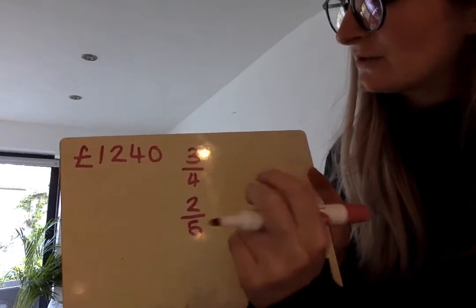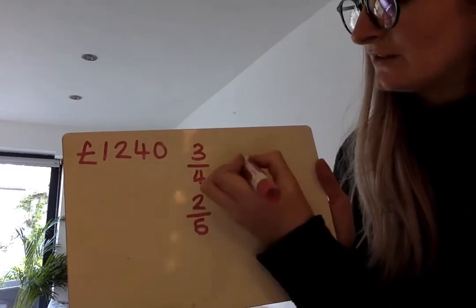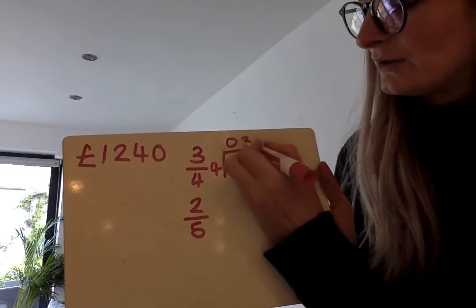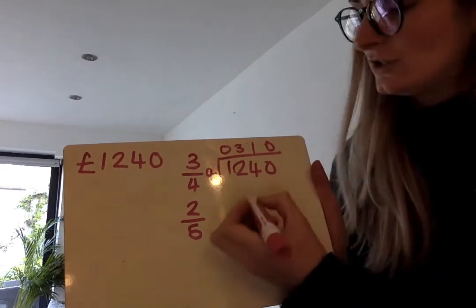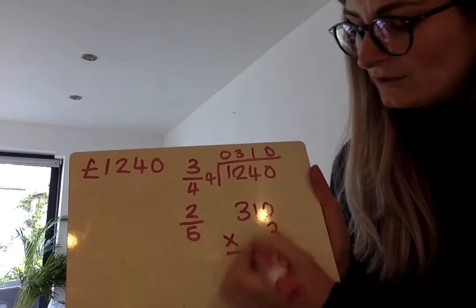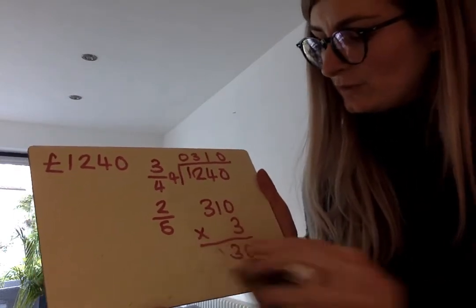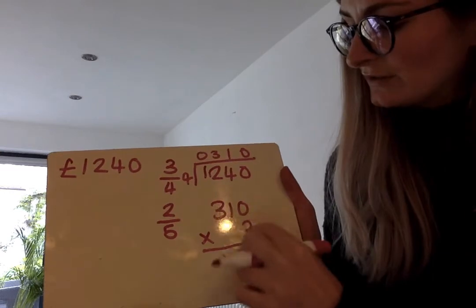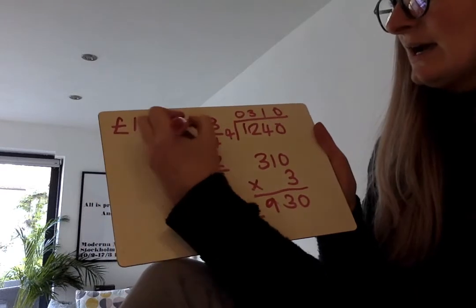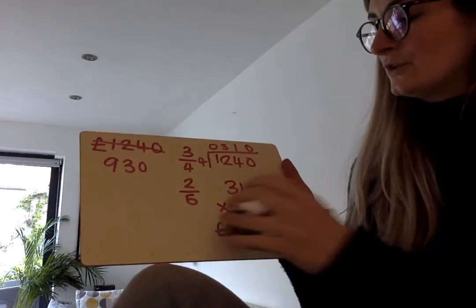To work out what three-quarters of this is I need to do 1240 divided by 4 times by 3. So 1240 divided by 4 is 310 and I'm going to times it by 3. 310 times 3 is 930. So they think in the first year they could make £930.